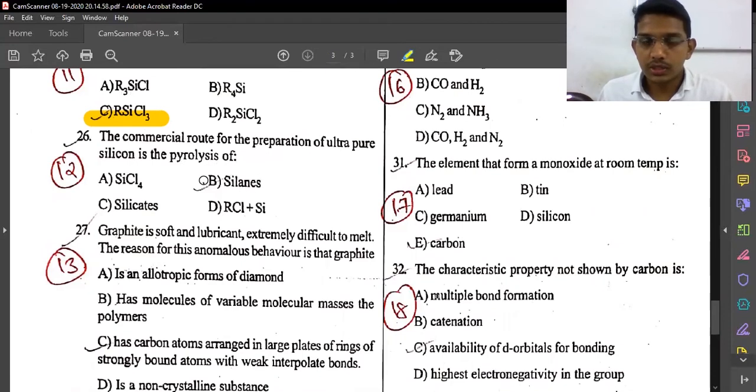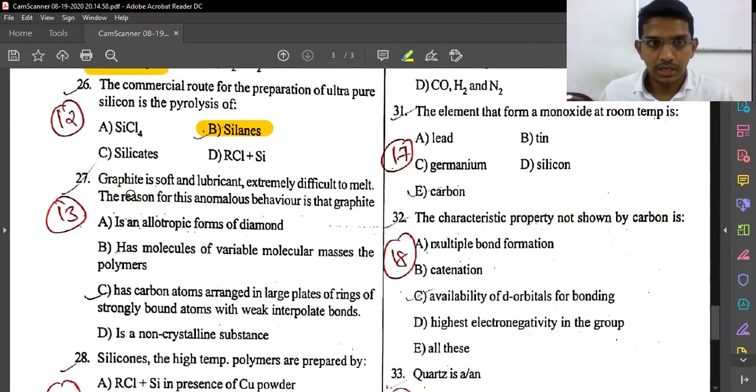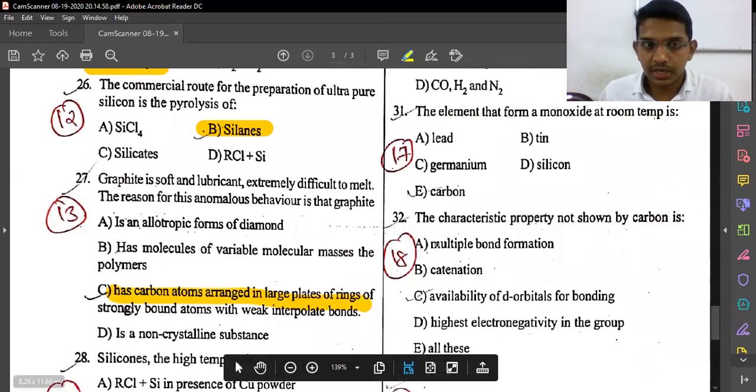Graphite is soft and lubricant, extremely difficult to melt. The reason for this anomalous behavior is that carbon atoms are arranged in large plates of rings of strongly bound atoms with interpolate bonds.